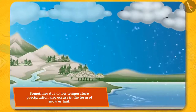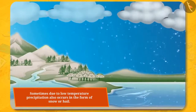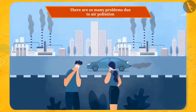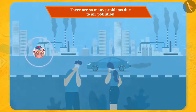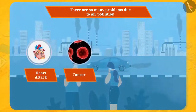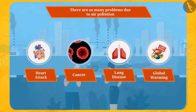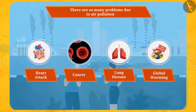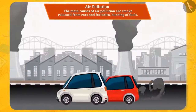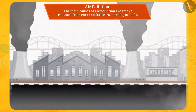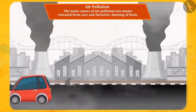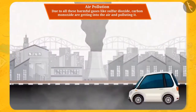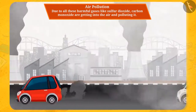There is no doubt air is very important for us. But what will happen if it gets polluted? There are so many problems due to air pollution, like heart attack, cancer, lung disease, global warming, etc. The main causes of air pollution are smoke released from cars and factories and burning of fuels. Due to all these, harmful gases like sulphur dioxide and carbon monoxide are getting into the air and polluting it.